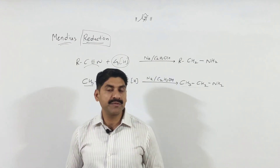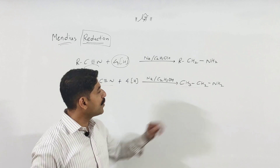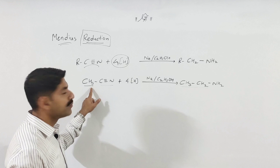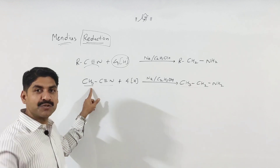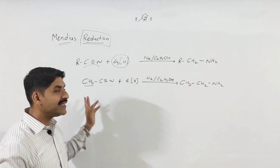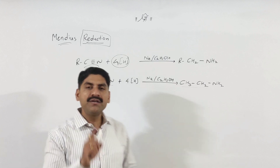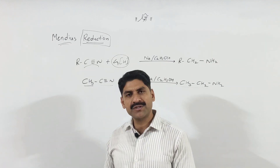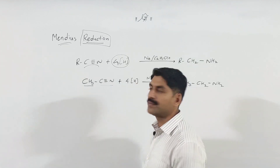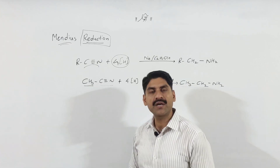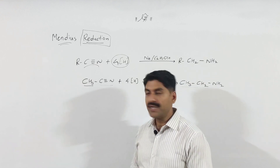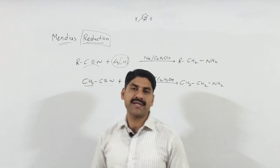How will you obtain ethylamine? You start from methyl cyanide, acetonitrile, or ethanenitrile — this is a nitrile to amine conversion via reduction. What is the action of sodium and alcohol (ethanol) on acetonitrile? It provides nascent hydrogen, and carries out amine reduction.